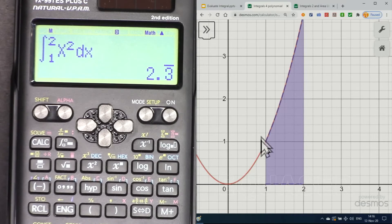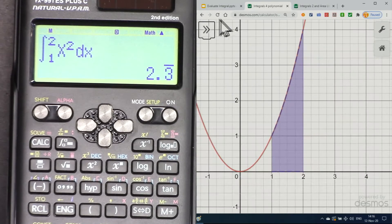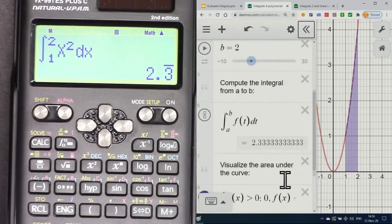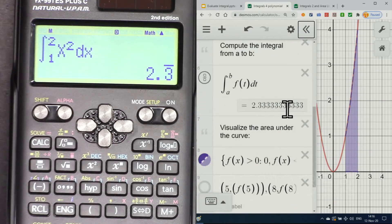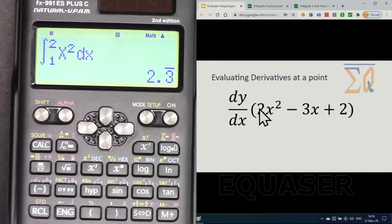Here is our function, and this is our integration. The area under the curve shows like this, so from 1 to 2. As you can see, the answer is 2.333.